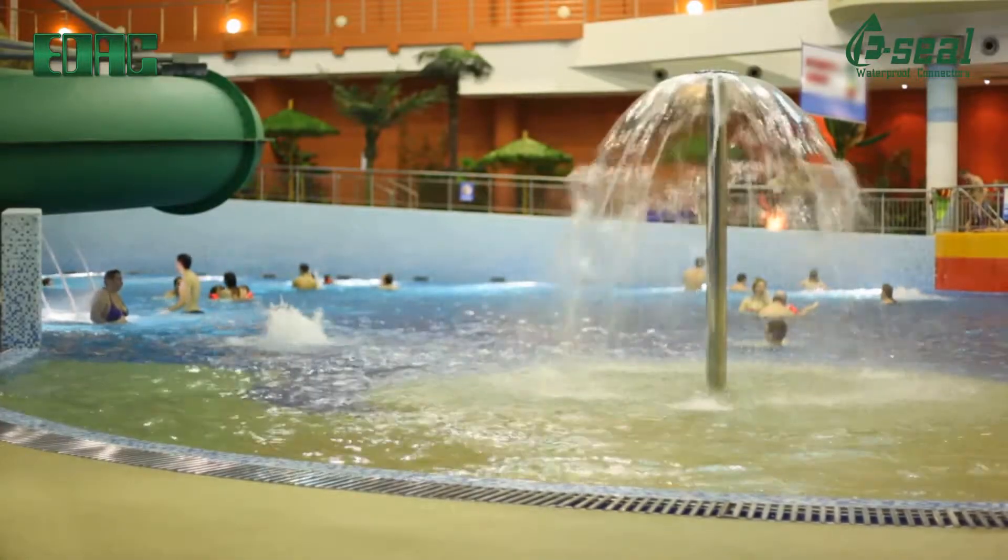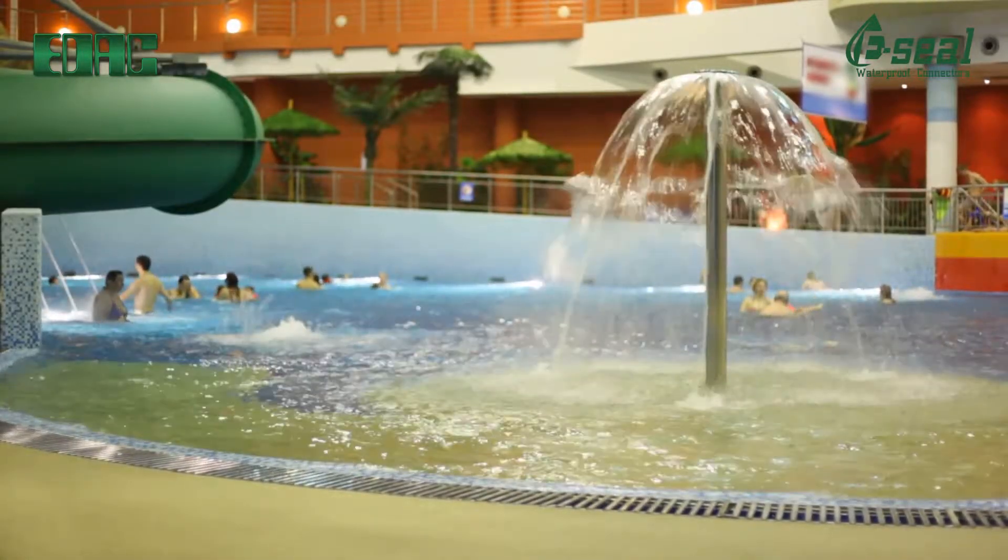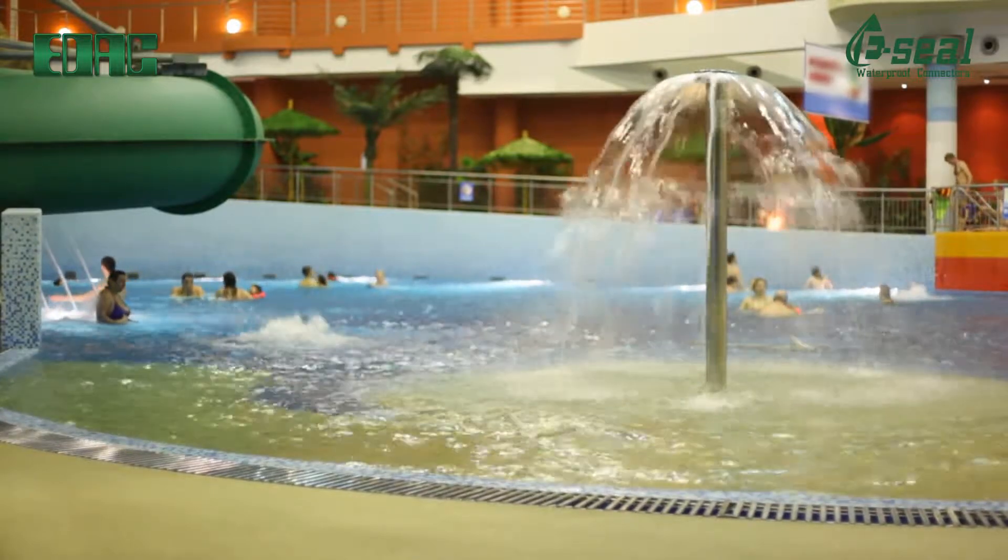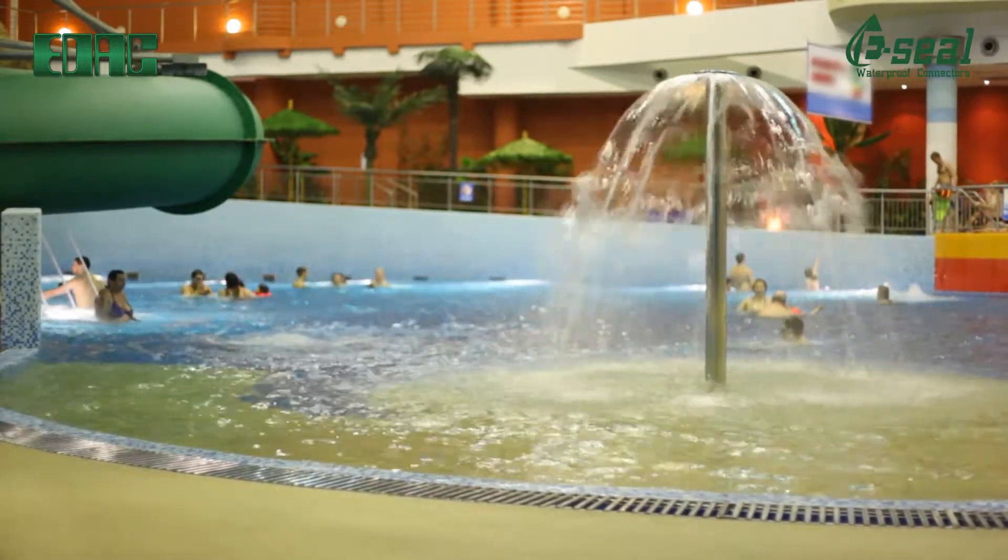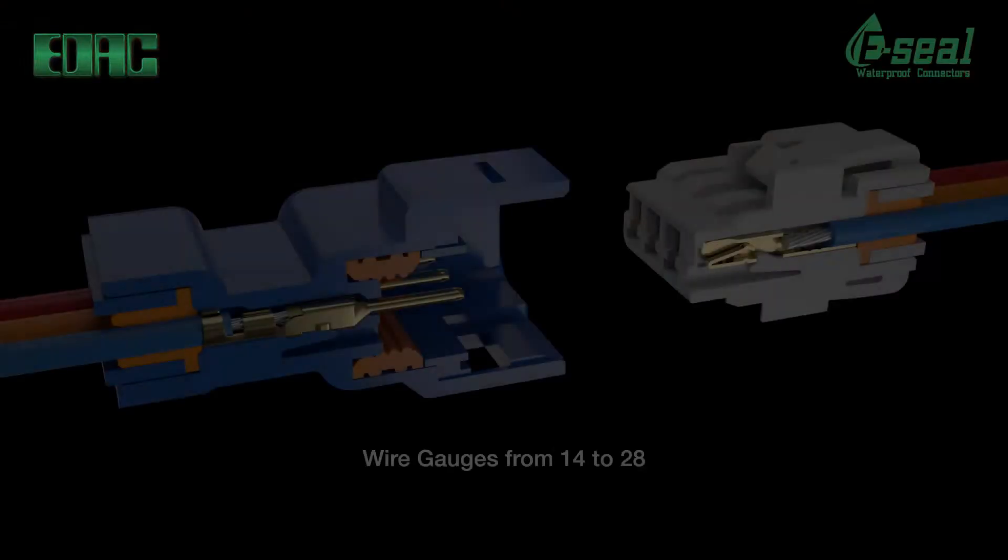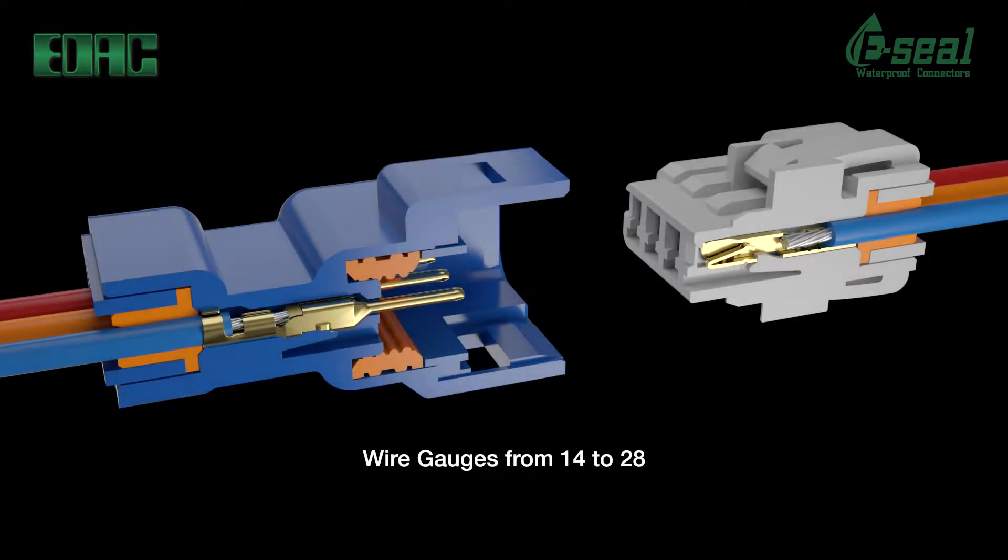EDAC inline waterproof connectors withstand the wettest conditions while delivering power when and where you need it most. EDAC inline waterproof plug and socket connectors are designed for wire to wire and wire to board applications with sizes ranging from 14 to 28 gauge. Crimp and poke contacts provide for easy assembly and will accommodate various wire gauges.